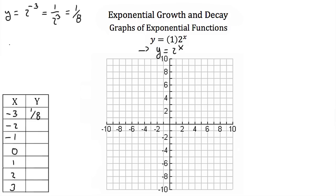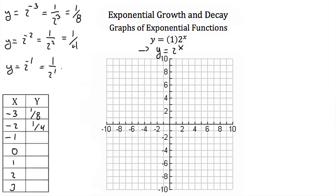Next I'll plug in negative 2: y is equal to 2 to the negative 2 power, which is the same as 1 over 2 squared. 2 squared is 4, so this is 1/4. Then plugging in negative 1: y is equal to 2 to the negative first power, or 1 over 2 to the first power. Anything to the first power is just itself, so this is 1/2.